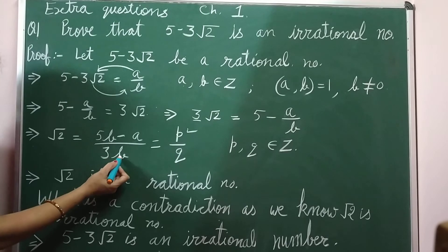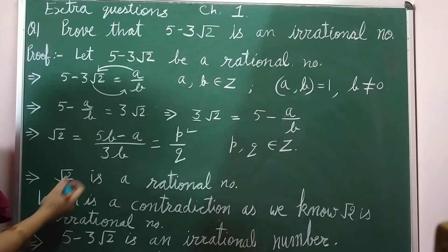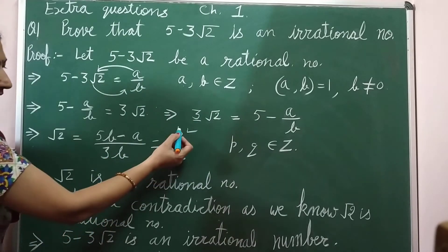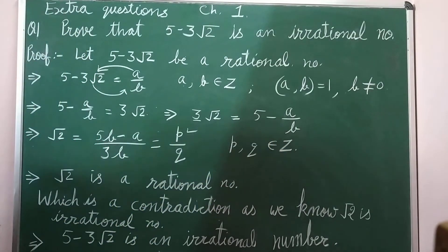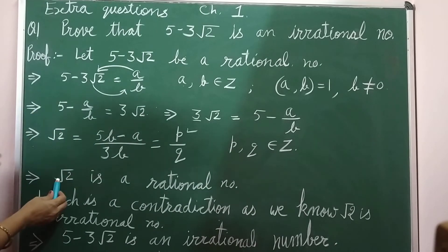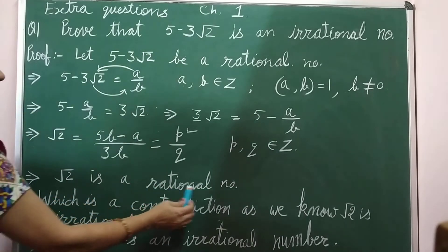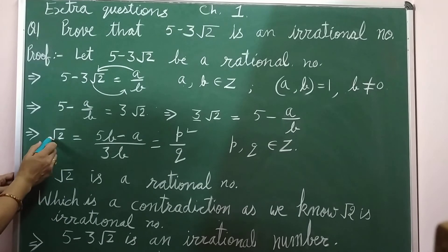And here, if b is a non-zero integer, so 3 into b will also be a non-zero integral value. So let it be p over q, where p and q both are integral values. Now from here, root 2 is a rational number.